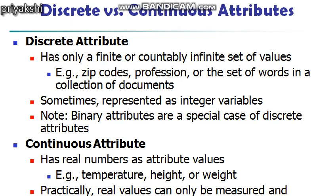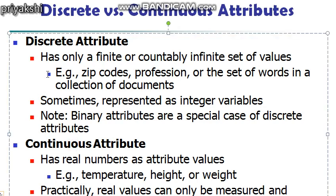Hello everyone, welcome to this video tutorial on discrete versus continuous attributes. In the last video we have seen the different types of attributes, which are nominal, ordinal, ratio, and interval. An independent way of distinguishing between attributes is by the number of values they can take. There are two types: discrete attributes and continuous attributes.